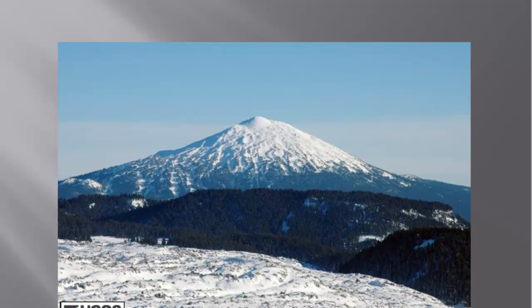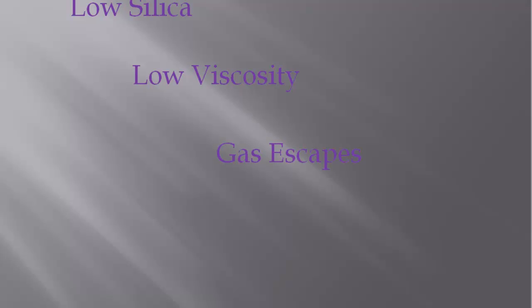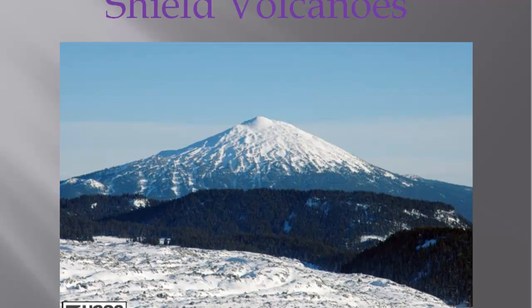So in summary: when we have high silica, we have high viscosity, the gases are trapped, and we have explosive eruptions — we end up with cinder cones. When we have low silica, we have low viscosity, the gas escapes, we have quiet lava flows, and we end up with shield volcanoes. I know I went really fast, so watch it again — thanks for watching.